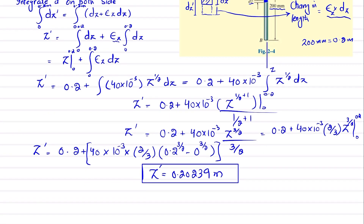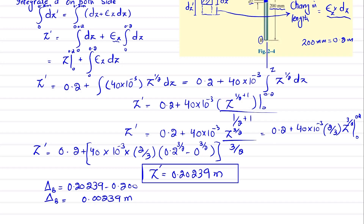We were asked to find the displacement of point B. The displacement delta_B equals the final length minus the original length: 0.20239 m − 0.200 m = 0.00239 m. In millimeters, this is 2.39 mm, and this displacement is directed downward. This is the displacement of point B of the rod.